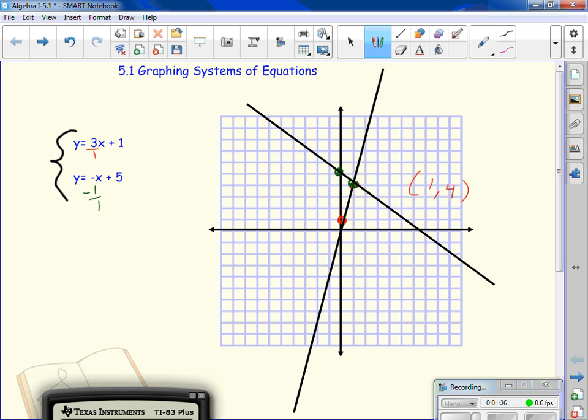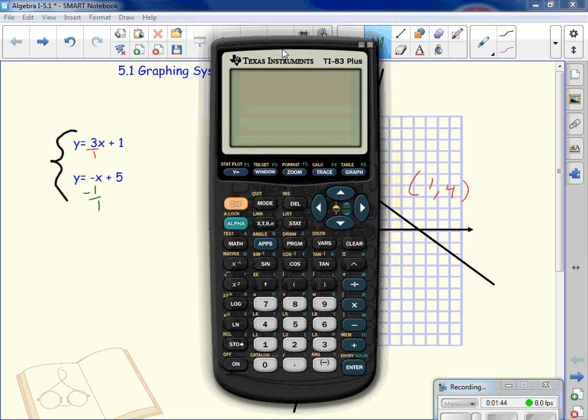So 1, 4 is the solution to my system. That means the point 1, 4 will give me the same answer for both.